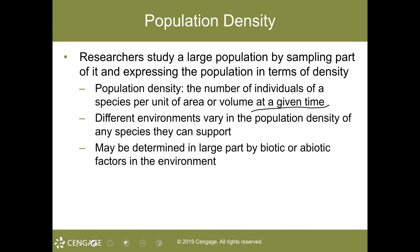Different environments vary in the population density of any species they can support, and density may also vary in a single habitat seasonally or year after year. Red grouse are ground-dwelling game birds whose populations are managed for hunting. Consider two red grouse populations in the moorlands of northwestern Scotland, about a mile and a half apart. At one location, population density remained stationary during a three-year period. But at the other site, it almost doubled in the first two years then declined to its initial density in the third year. The likely reason was a difference in habitat — researchers had experimentally burned the area where density initially increased, and young heather shoots produced after the burn provided nutritious food for the red grouse.